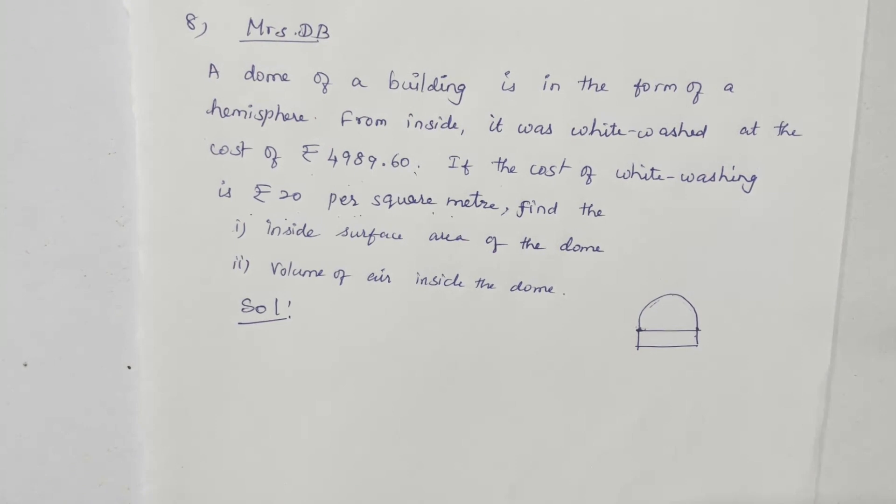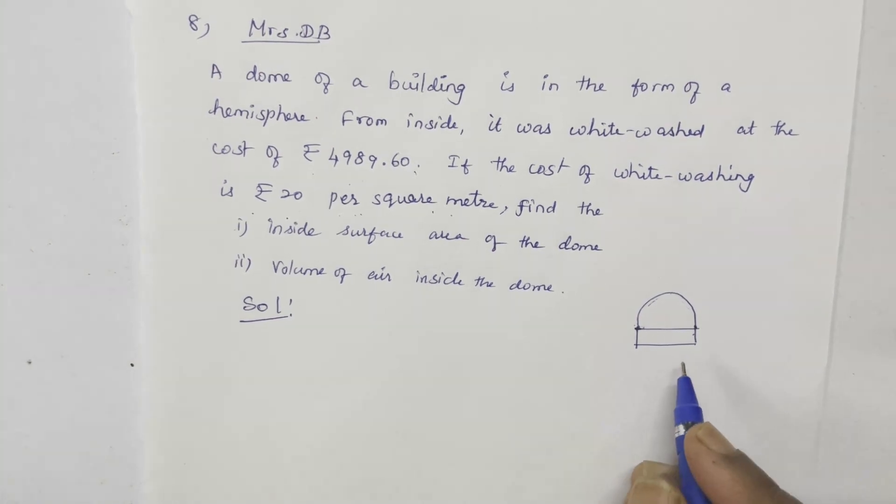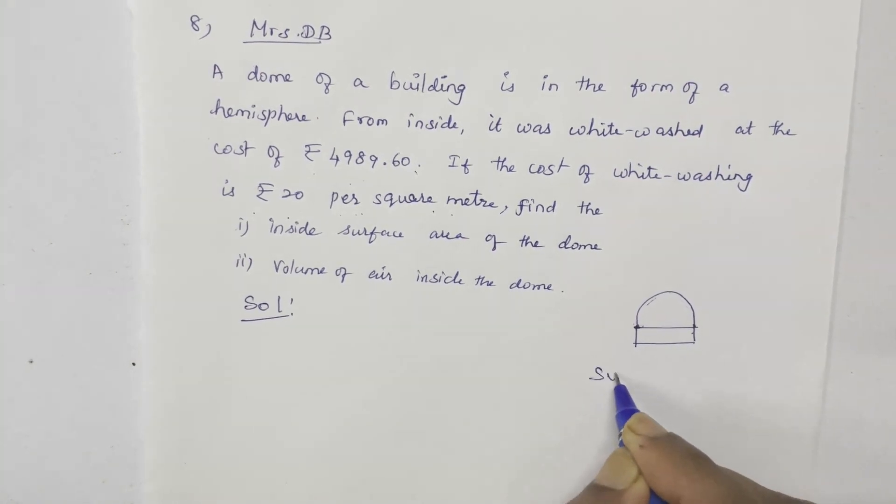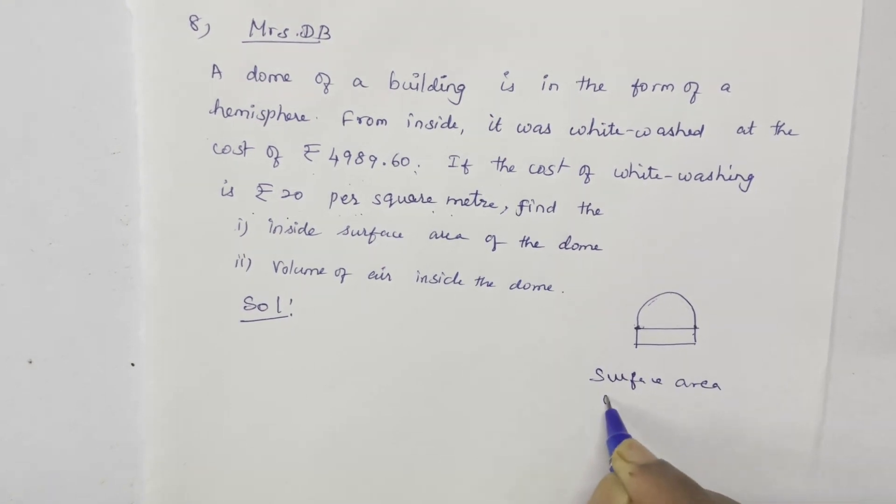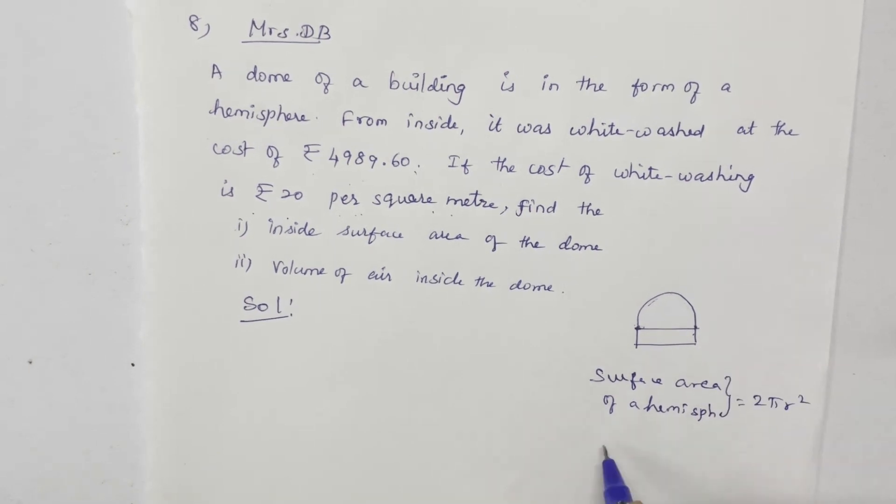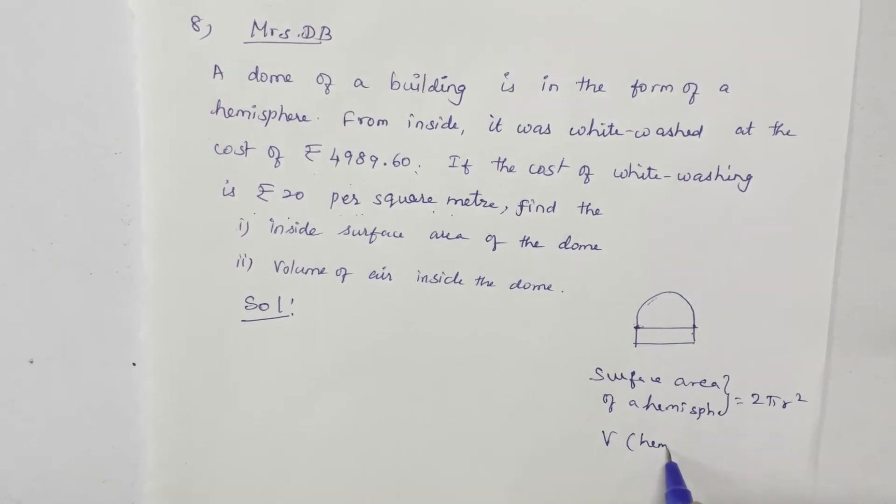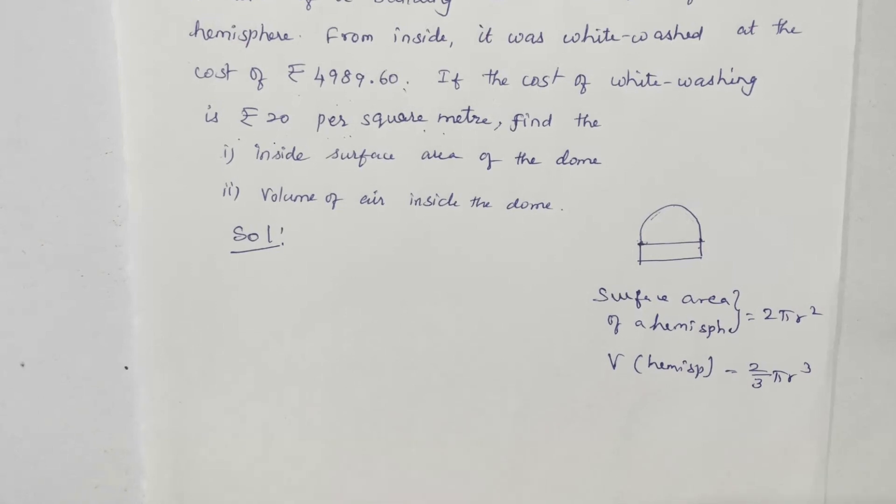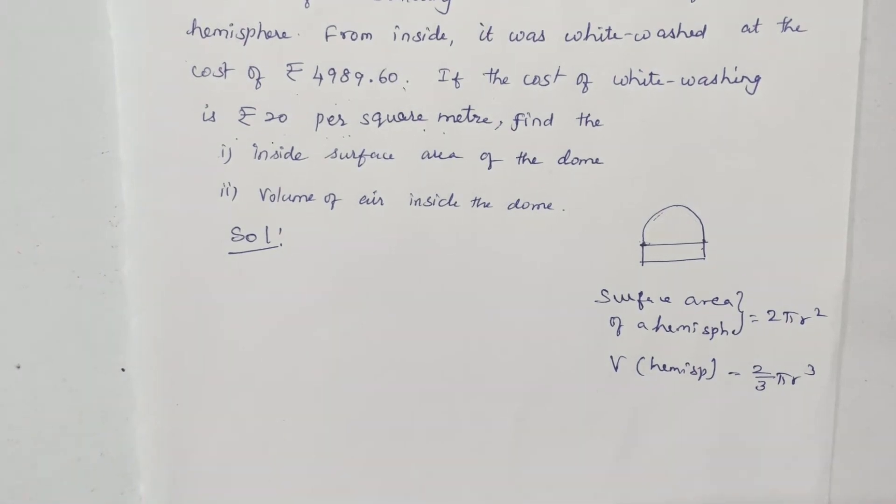The formula for volume of a hemisphere is 2 by 3 pi r cube. First I have to calculate the surface area of the hemisphere.